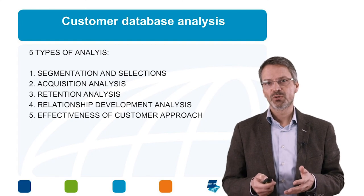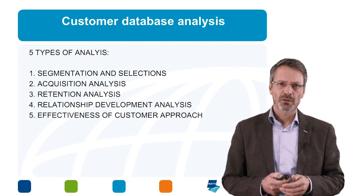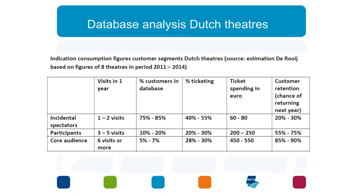Here are examples based on a customer database of eight theatres in the Netherlands — three groups: incidental spectators, participants, and core audience — showing number of visits in one year and percentage in the database. The core audience is a really small number but represents around 30% of ticketing and spends a lot more than incidental spectators. Customer retention rates — the chance of returning — are much larger for the core audience group.